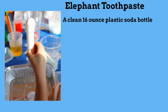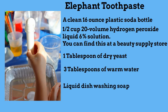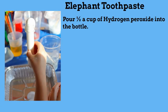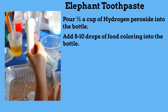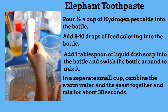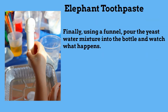Here are the ingredients for elephant toothpaste. Pour 1 half a cup of hydrogen peroxide into the bottom. Next, add 8-10 drops of food coloring into the bottle. Add 1 tablespoon of liquid dish soap into the bottle and swish it around. In a separate small cup, combine warm water and the yeast. And finally, using a funnel, pour the yeast water mixture into the bottle and watch what happens.